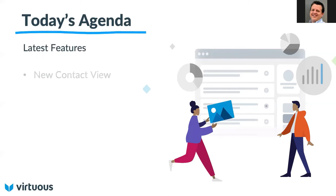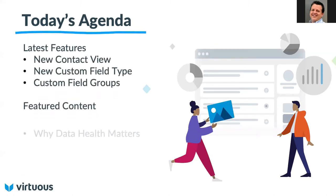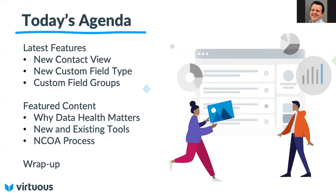In terms of what we want to cover today, as always, we want to take a look at some of the latest release features. We had the new view on the contact record and some new custom field types and options, and even the ability to format your custom fields into groups. We'll look at a couple of those. And one of the big new features is really around data health and the data health tooling available in Virtuous.